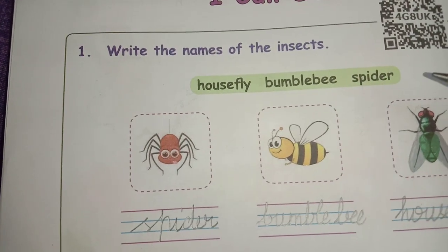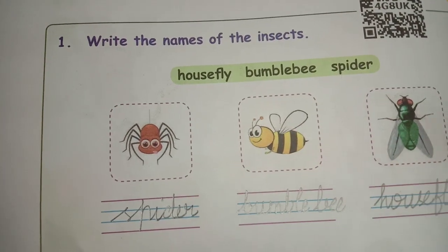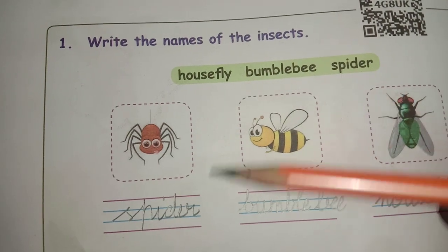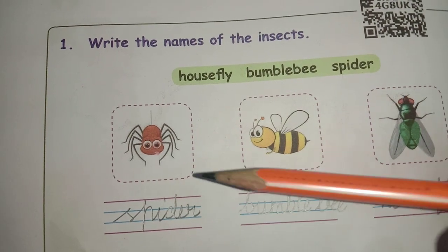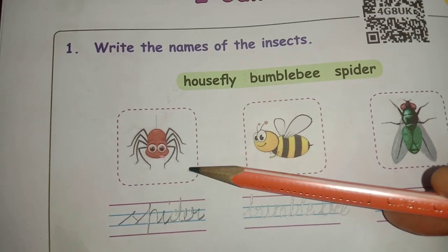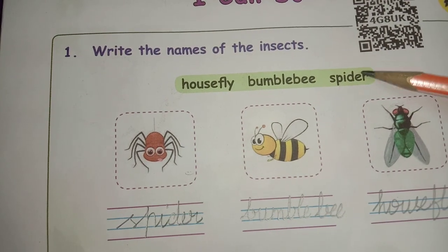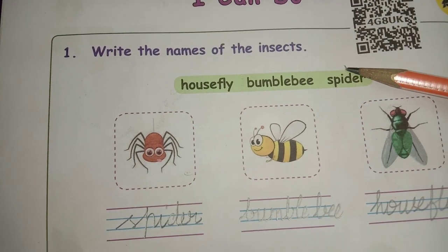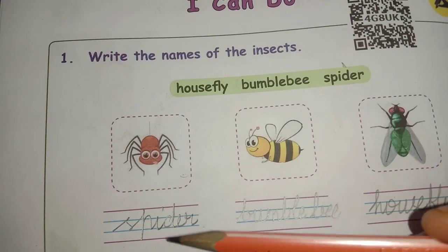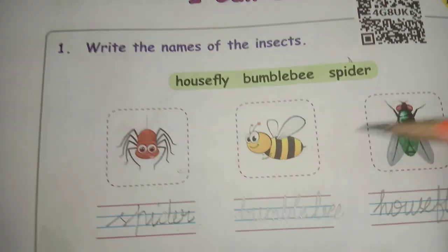They have given the options inside the bracket, then pictures are given and you should choose the correct answer and write down. See the first picture — what is this? Yes, spider. So this is the first one. You should write it in the lines: S-P-I-D-E-R, spider.